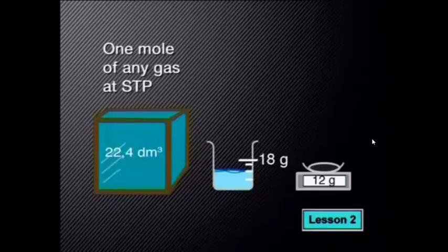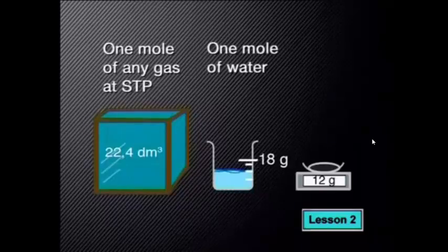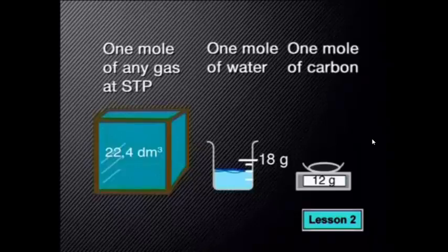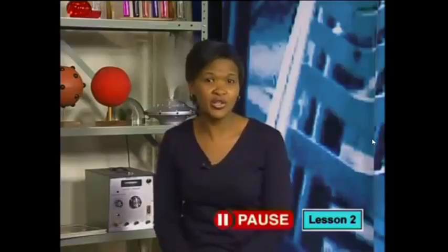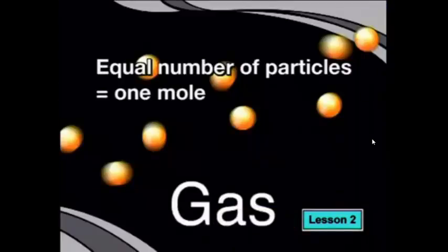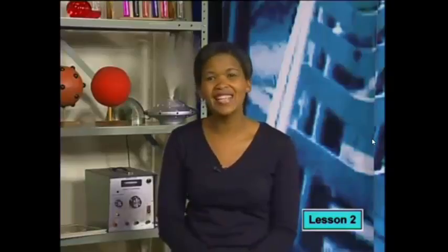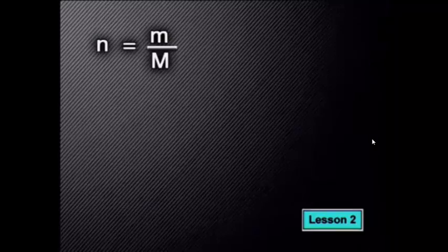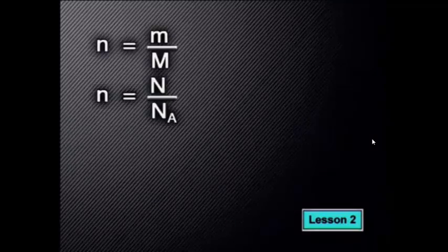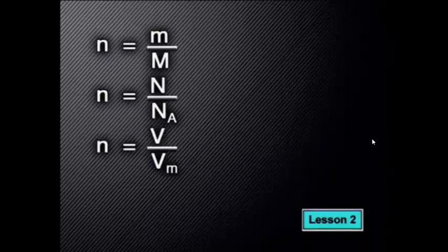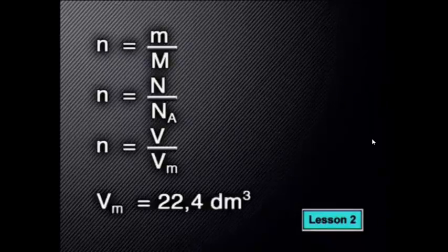This is quite a large volume compared to one mole of water, which is a liquid, or one mole of carbon, which is a solid. This tells us that the particles of a gas are actually very far apart from each other. All these samples contain the same number of particles — one mole. We give this volume of one mole of gas at STP the special symbol Vm. In the same way that we have a relationship for moles and mass and moles and number, we can now write a relationship for moles and volume at STP: n = V ÷ Vm, where the number of moles equals the volume of the sample divided by 22.4 dm³.